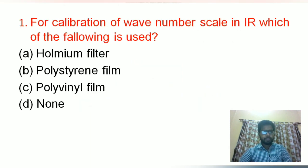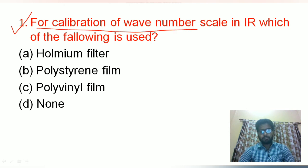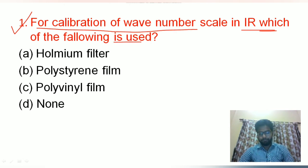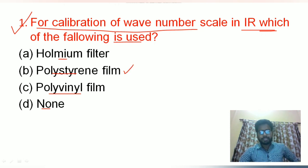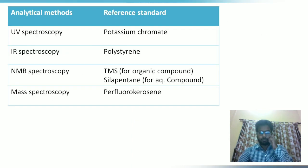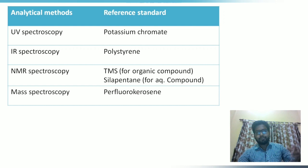The first question: for calibration of the wave number scale in IR spectroscopy, which of the following is used? Options are: holmium filter, polystyrene film, polyvinyl film, and none of the above. Polystyrene film is used for the calibration of IR spectrum. Let's see what other reference standards are used in other analytical techniques.